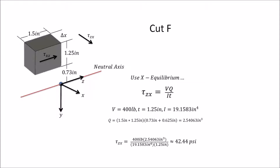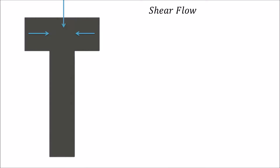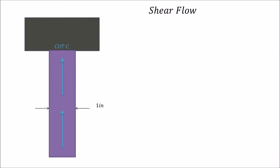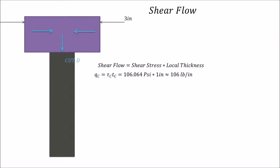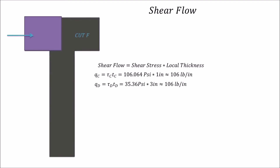Now that we've calculated all shear stresses, let's look at shear flow. The flow moves in from the outside ends of the flange, flowing inward to the middle, joining and flowing down through the web. Shear flow at cut C: q_C = τ_C × t_C = 106.064 × 1 ≈ 106 lb/in. Shear flow at cut D: q_D = τ_D × t_D = 35.36 × 3 ≈ 106 lb/in. Shear flow at cut F: q_F = τ_F × t_F = 42.44 × 1.25 ≈ 53 lb/in.